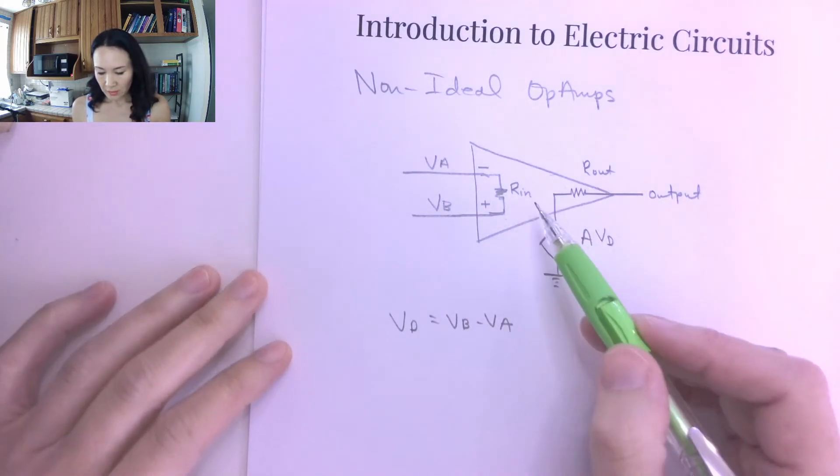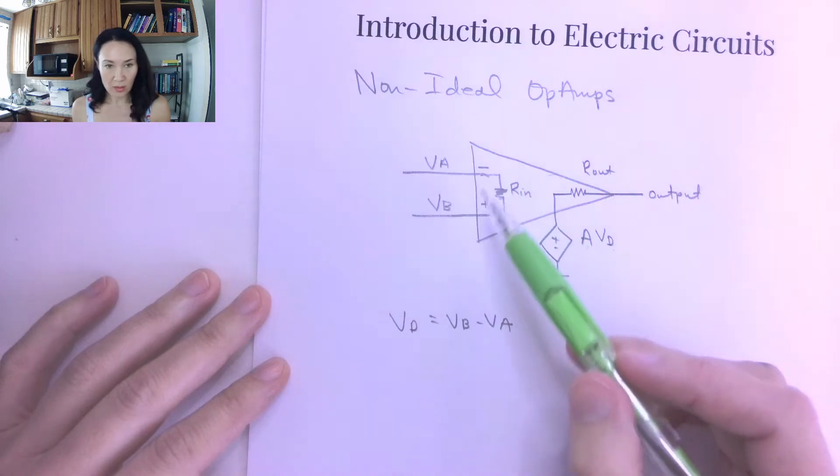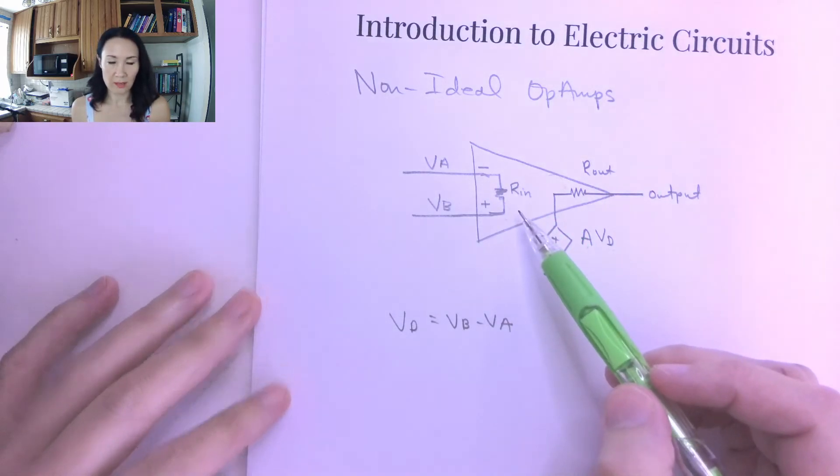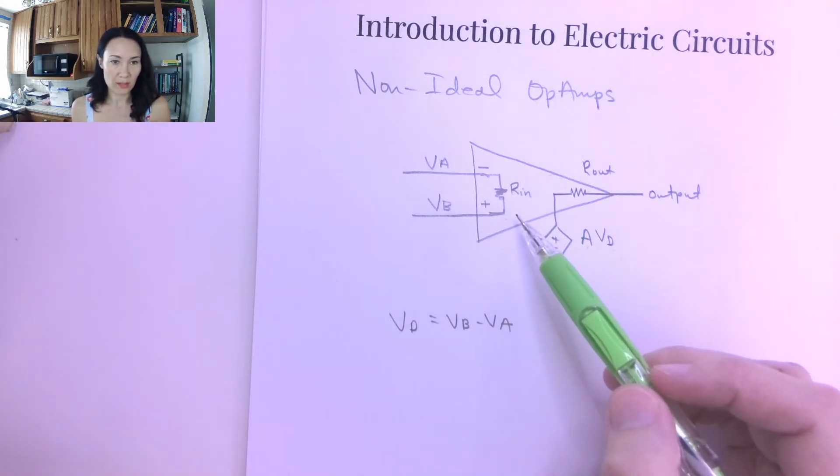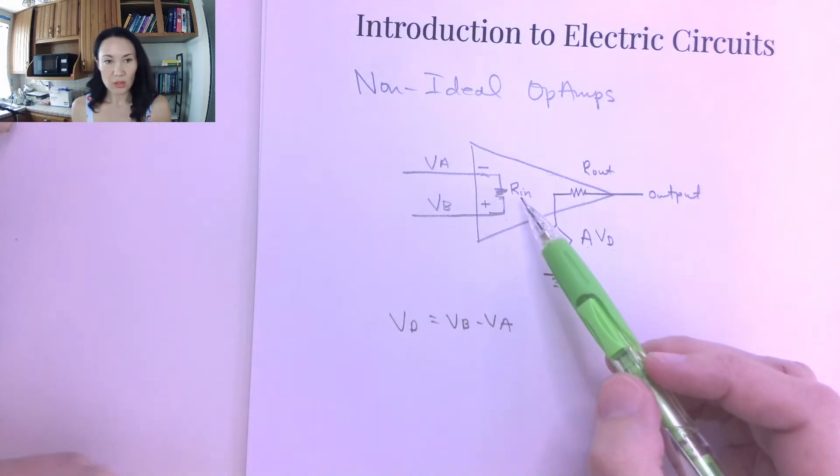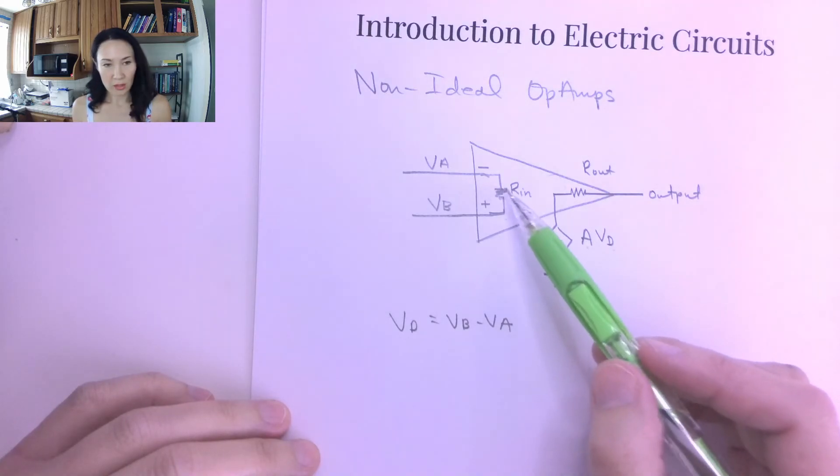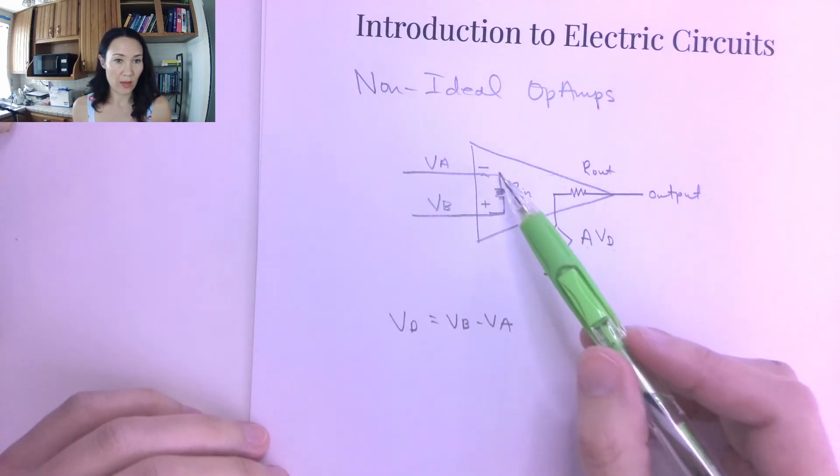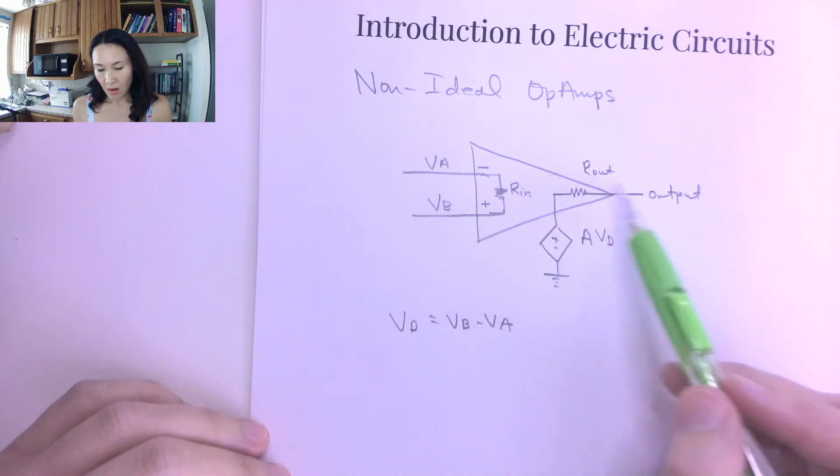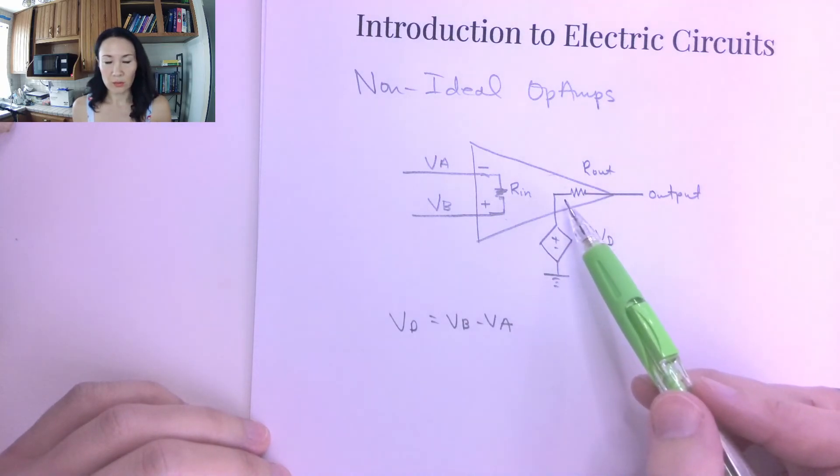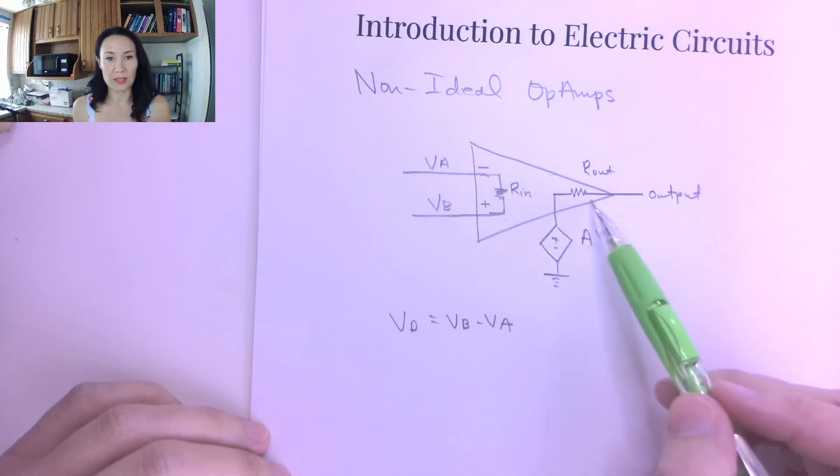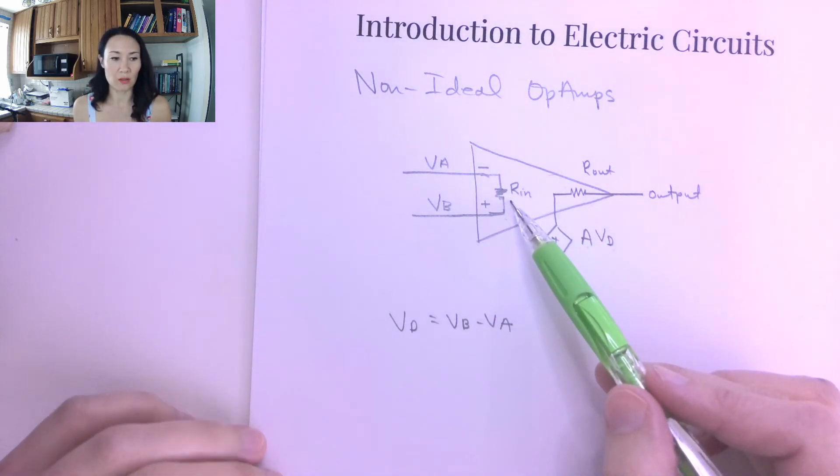But the interesting thing here to note is that Rn is going to be really big, something like 2 megaohms, usually for the 741 op amp. So 2 megaohms is really huge. In fact, it's almost going to look like a break in the circuit, like an open circuit. Rout is going to be somewhere between 10 ohms and 100 ohms. So something that's a little bit more reasonable, this is going to be much smaller compared to this.